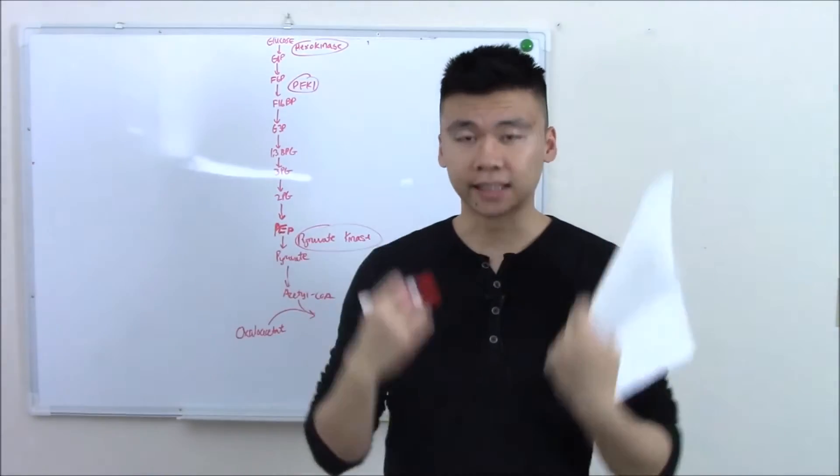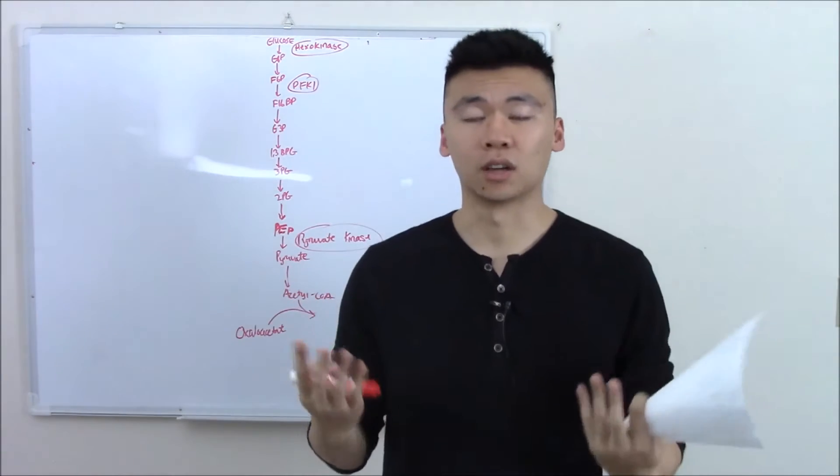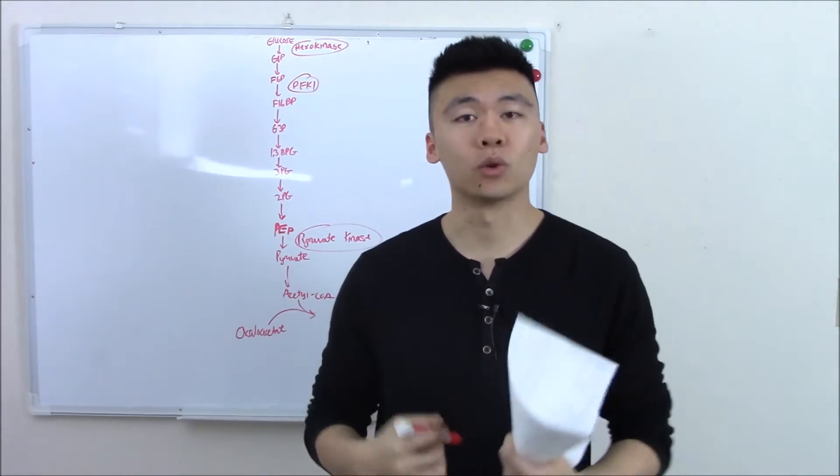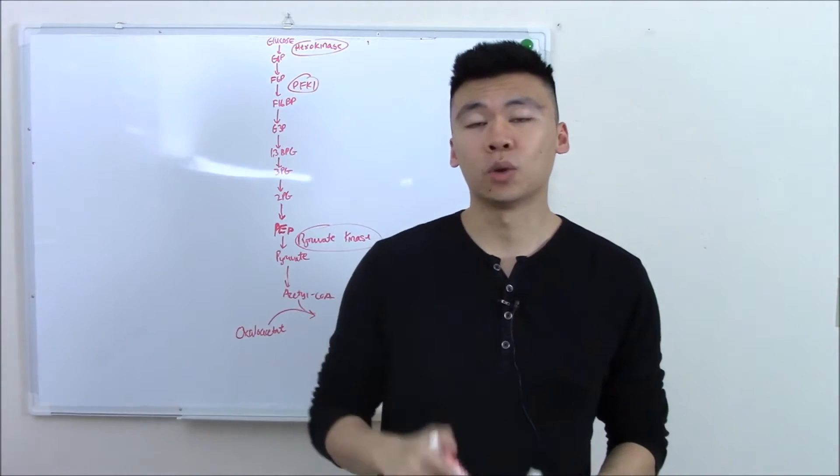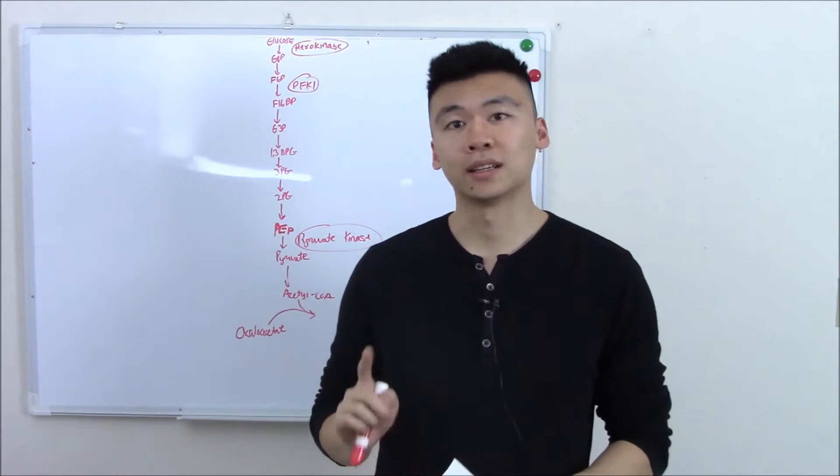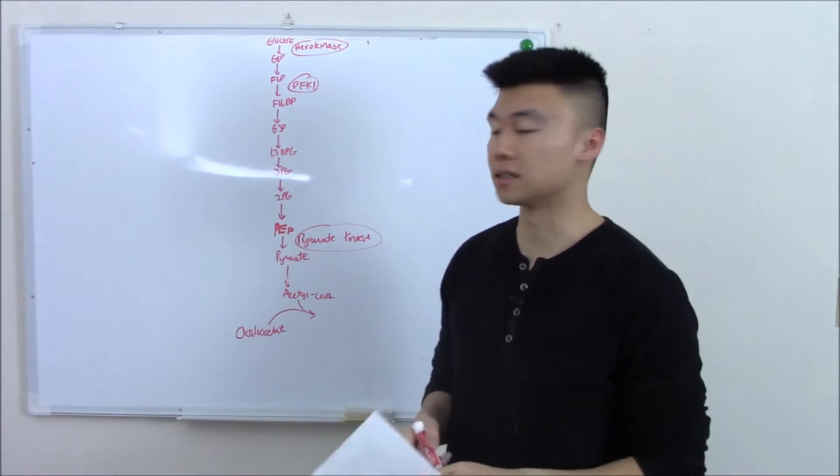We talked about taking in glucose and using it to make ATP, but what if we want to release glucose? We haven't eaten in a while and we want to release some glucose into our bloodstream. We can do that in two ways. I'll tell you the first way now - that is through gluconeogenesis. Gluconeogenesis is basically the reverse of glycolysis.